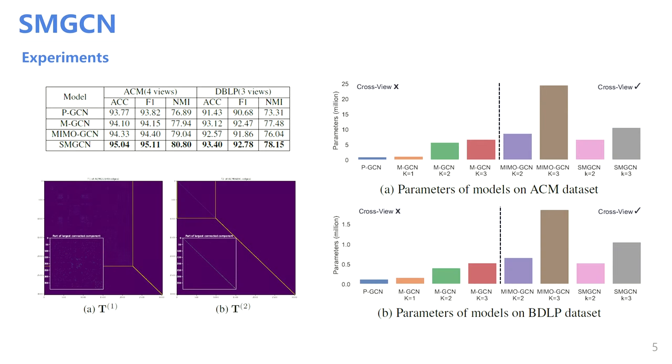Empirical experiments show that our method is both simple and effective. As the right two figures show, the parameter amount and their growing speed with the order k of our method are much lower than MGCN and MIMO-GCN.